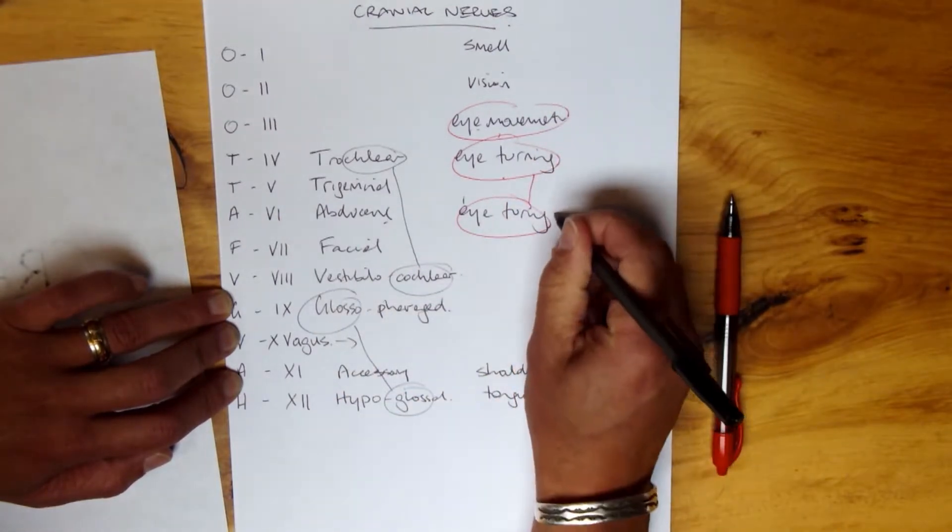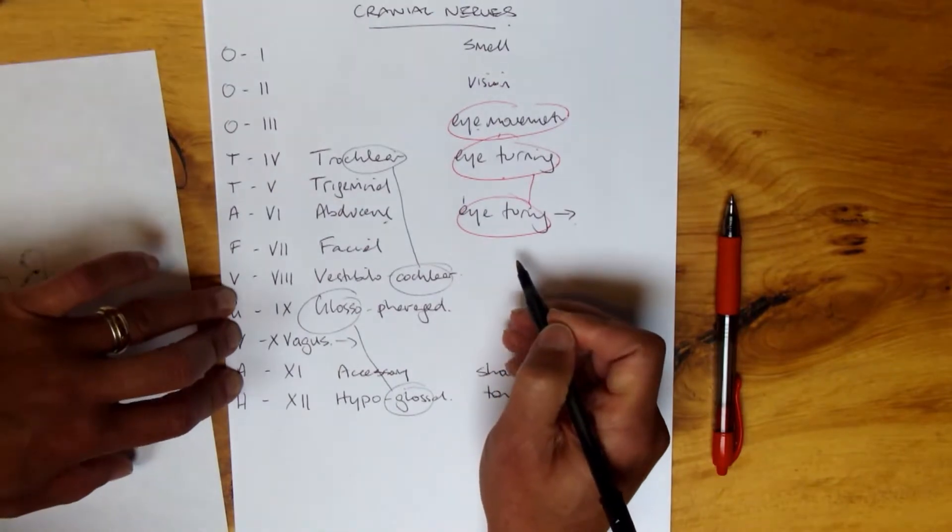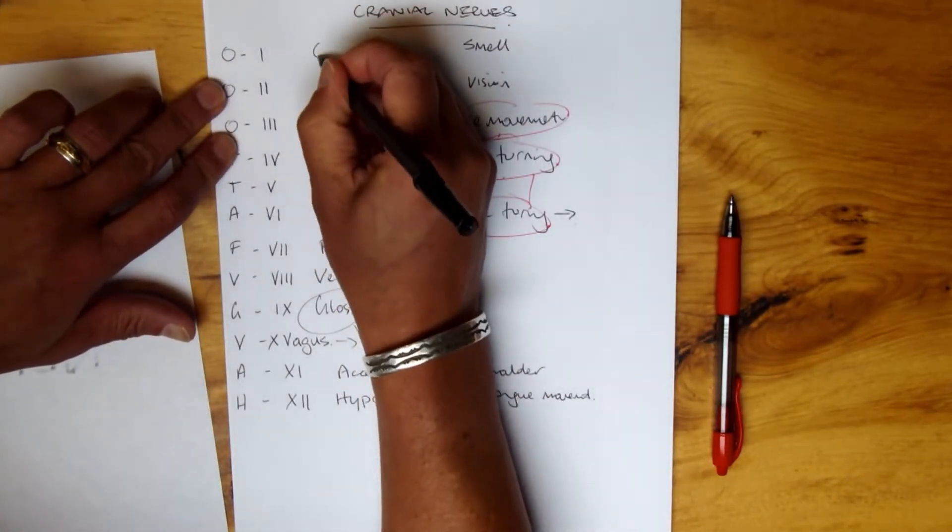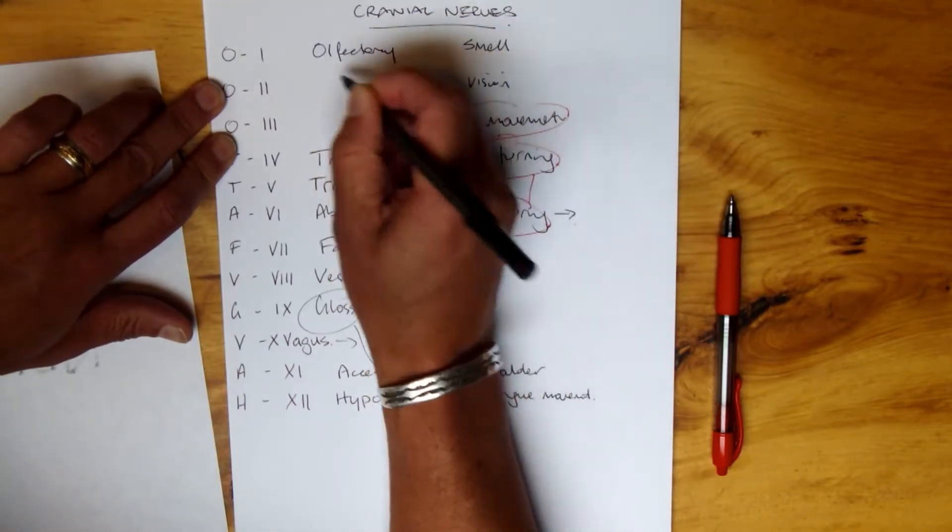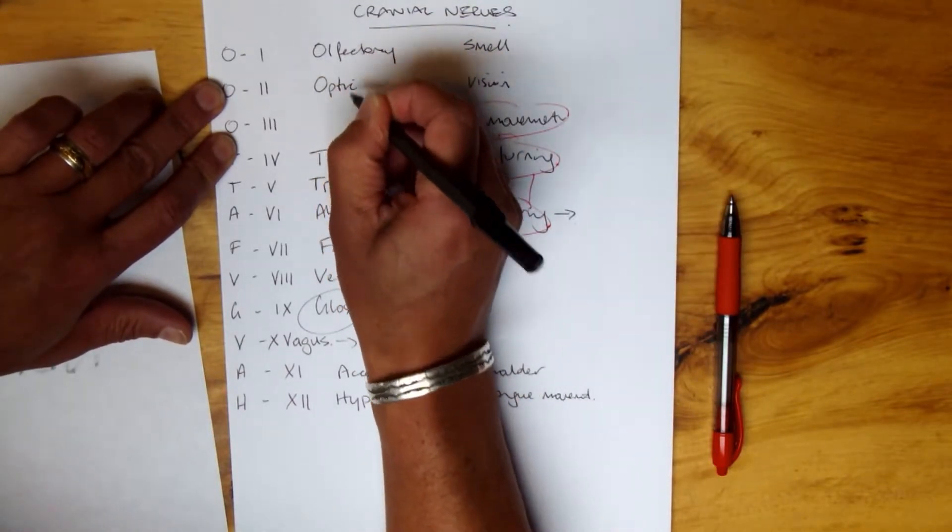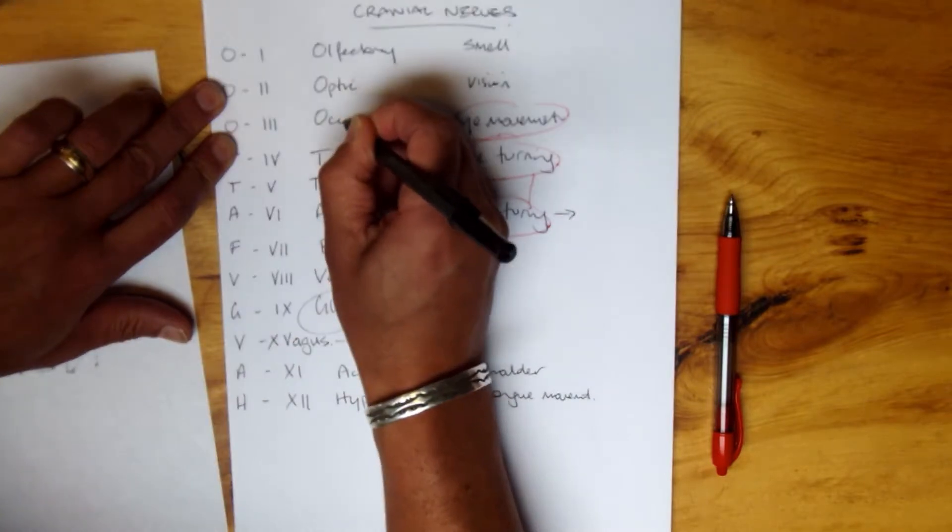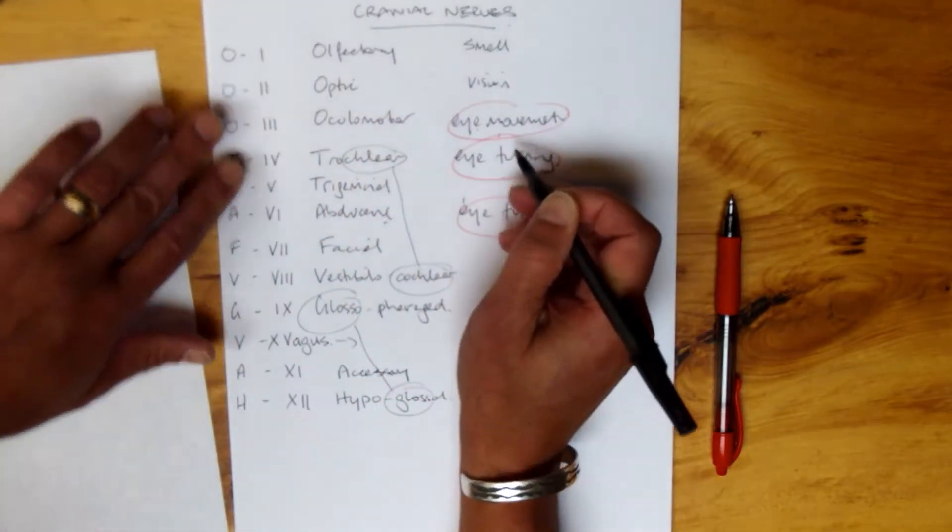So they're all involved in the eye. This is more lateral if you want to know about in that detail. Let's go back here: smell, olfactory, vision is the optic, the good old optic nerve, oculomotor for eye movement.